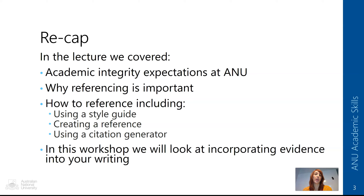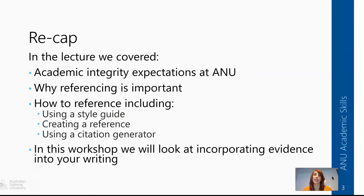Academic Skills recommends that you use the Monash guide, and we link to that on our website. You can just Google 'ANU Academic Skills referencing' and you'll see the link to the Monash guide. There you can pick your style, select your source type — whether it's a journal article, book chapter, newspaper article — and it will give you a template for how to do the in-text reference and the reference list at the end.